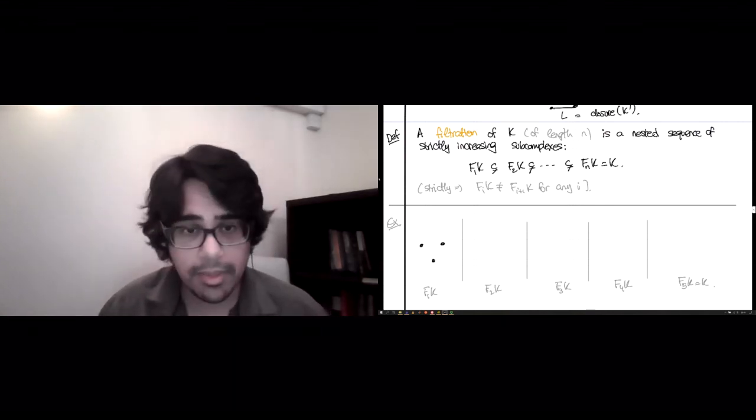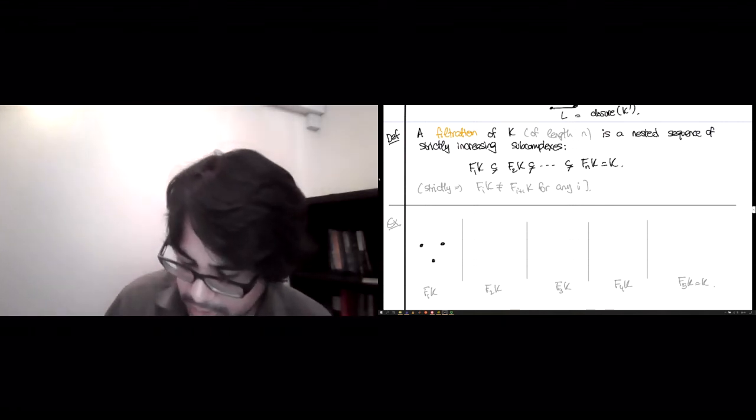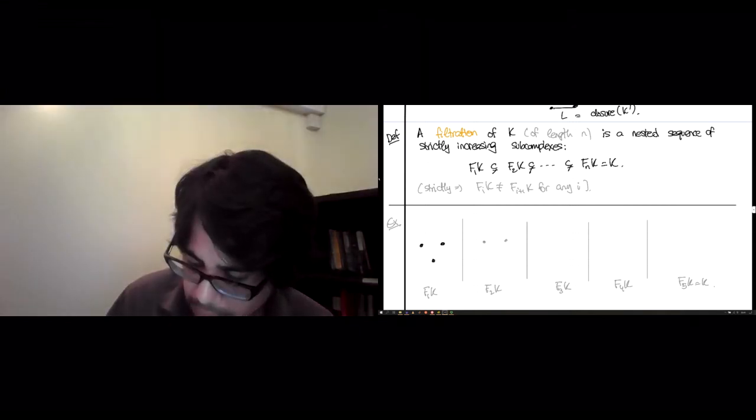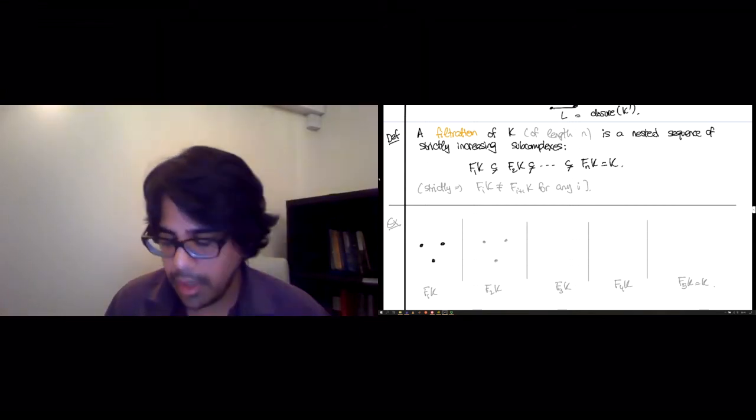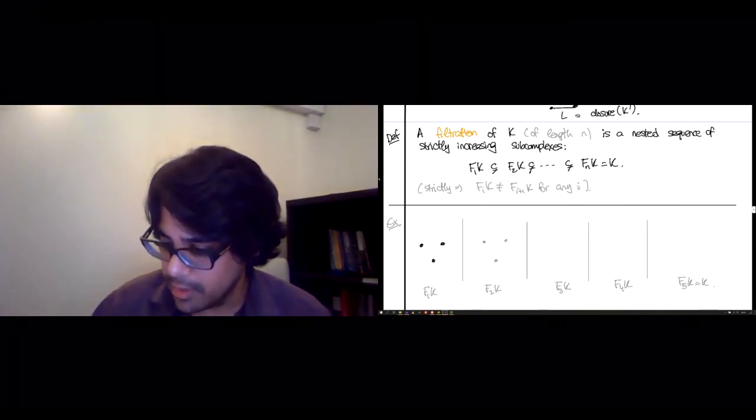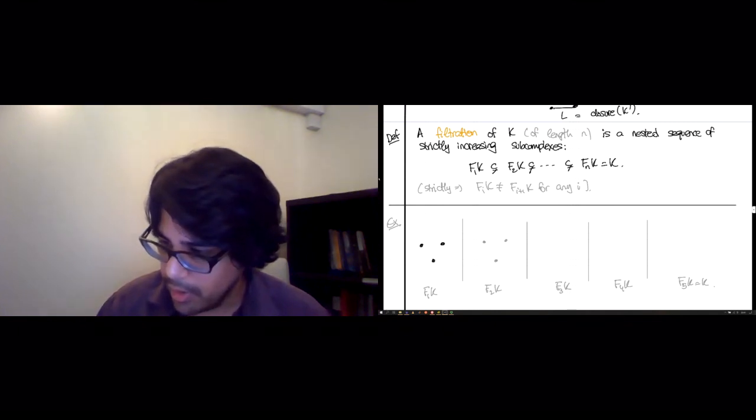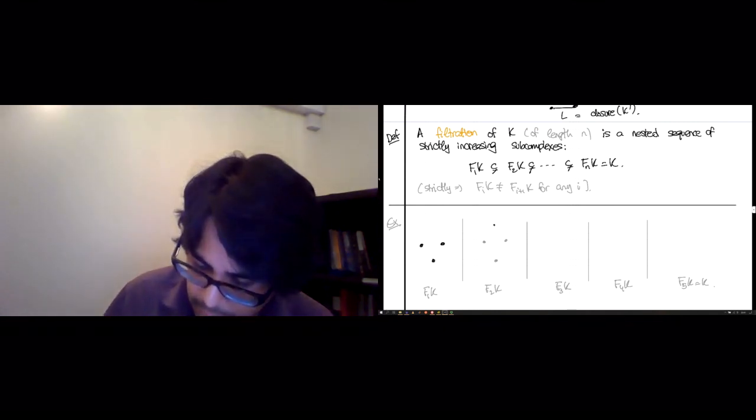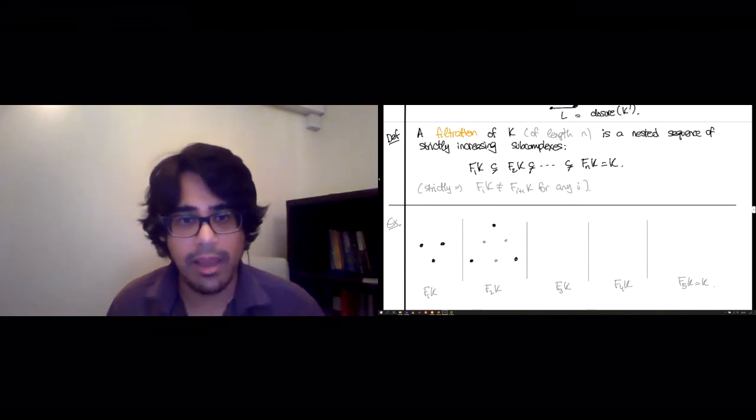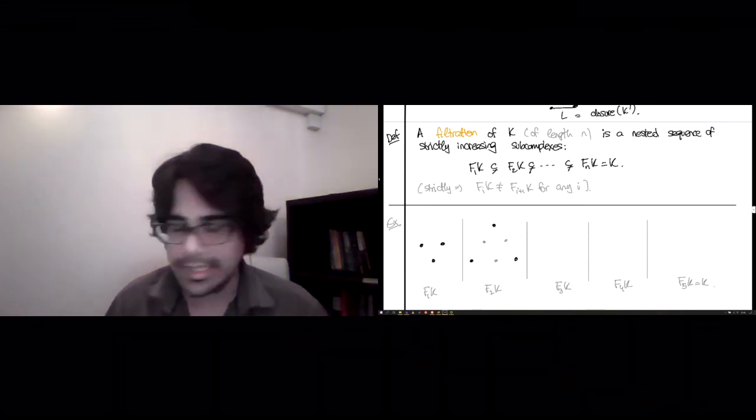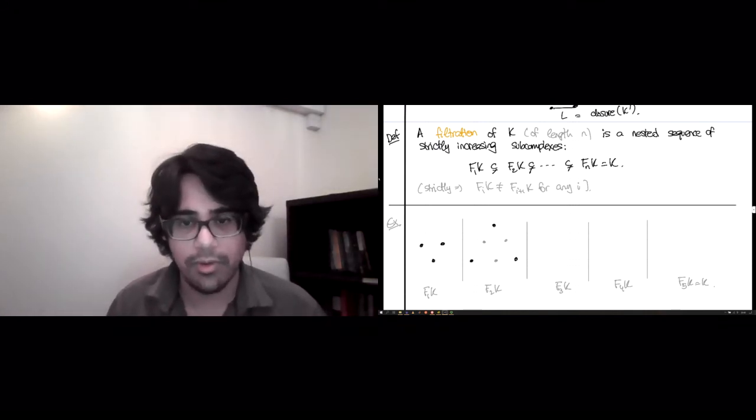And so what has to happen in F2K is at least these three vertices have to survive. So I'll put them in gray because they're old now, and the new things that show up, let's say, are these three new vertices, and that's it. So now we have six vertices, still a simplicial complex, still bigger than F1K, so so far we're good.